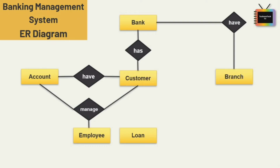Next, let's see the relationship between customer and loan. Customers can avail loans, so I am adding an 'avail' relationship between customer and loan. For the account entity, I am adding specialization. Specialization is a top-down approach where one higher level entity can be broken down into two lower level entities.